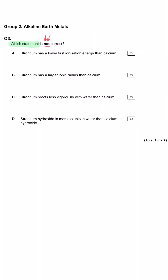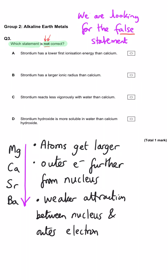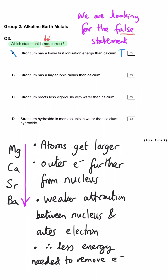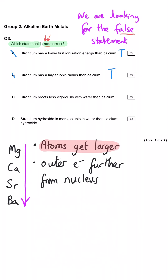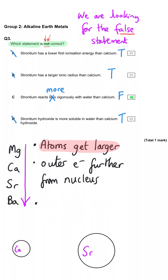Which statement is not correct? Strontium has a lower first ionisation energy than calcium — well, strontium is below calcium in Group 2 so it will have a lower first ionisation energy because that outer electron is lost more easily. Strontium has a larger ionic radius than calcium — that will again be true; it's further down the group, it has an extra energy level and therefore its ionic radius will also be larger. Strontium reacts less vigorously with water than calcium — this is the incorrect statement and so the correct answer.